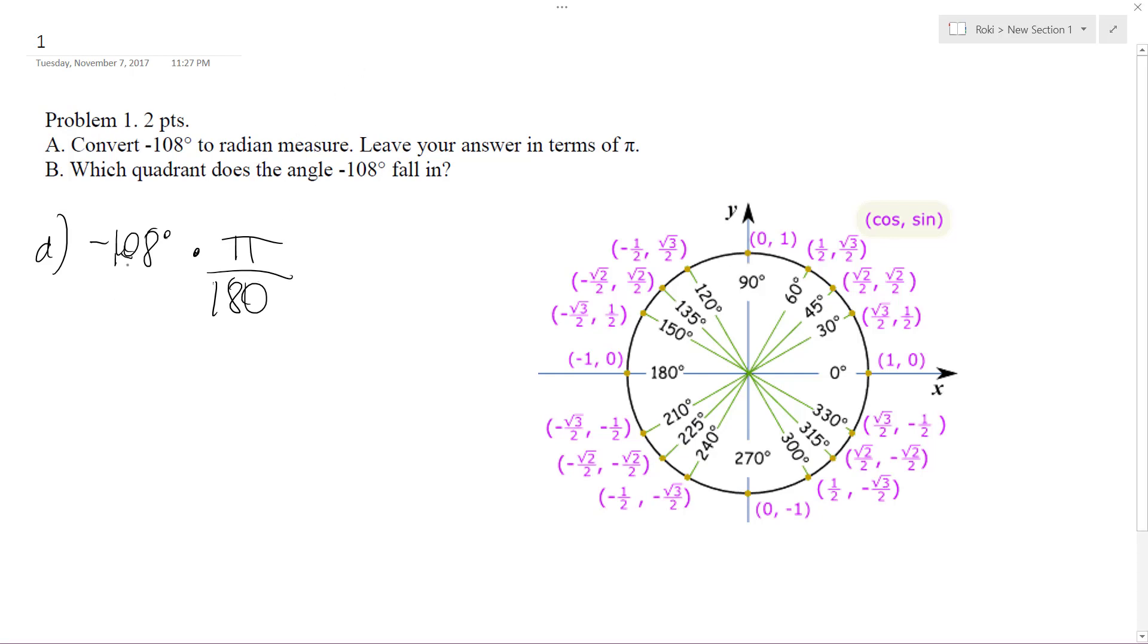So if I reduce these, 36 goes into this 3 times, and then 36 goes into this 5 times, so we get negative 3π over 5.